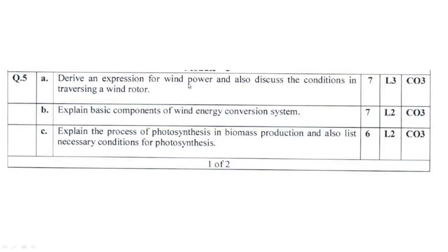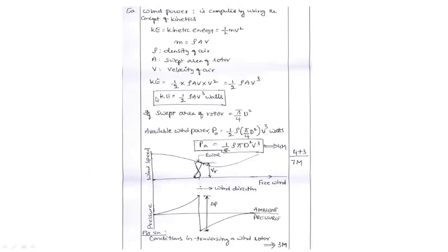Question number 5a: Derive an expression for wind power. Also discuss the conditions in transversing a wind rotor. So there is a derivation. I have seen this kind of derivation in every question. You can see - equation of kinetic energy. Then write the equation for mass. Here rho is the density of air, A is the swept area. Then v is the velocity of air. Afterwards you can substitute. Instead of m you can substitute the same like you can call it as 1 and this you can call it as 2. Substitute 2 in 1, you will be getting like this.